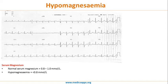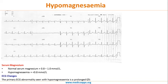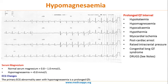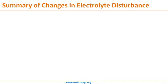Normal serum magnesium is 0.8 to 1.0; hypomagnesemia is defined as less than 0.8. The primary ECG change is prolonged QT interval. Prolonged QT interval has been asked so many times that you are required to learn all its causes thoroughly — a list of causative drugs is available in the notes.